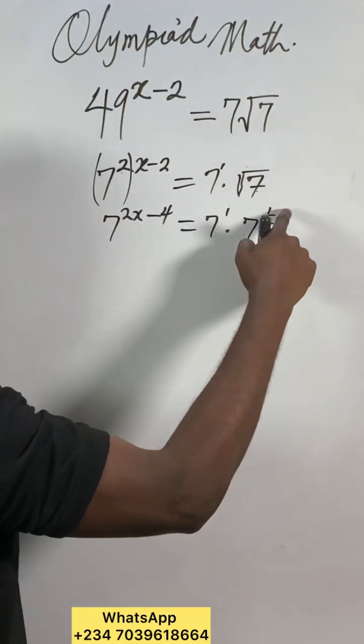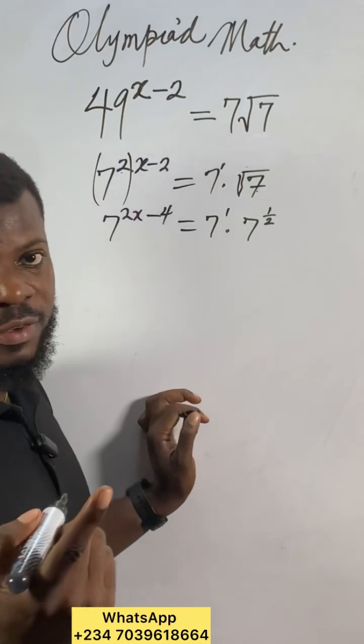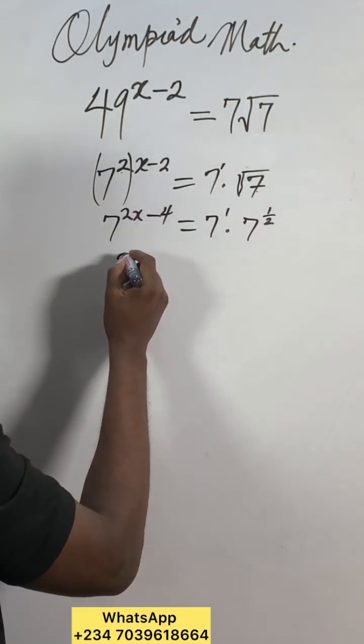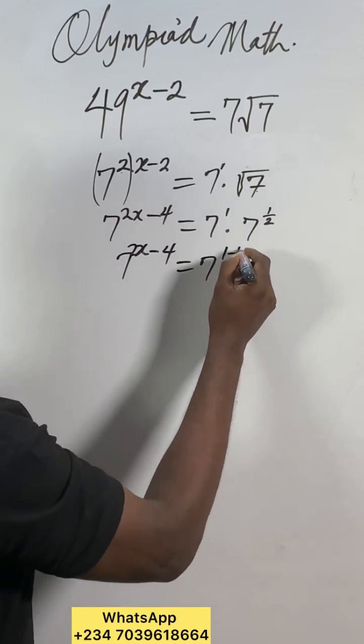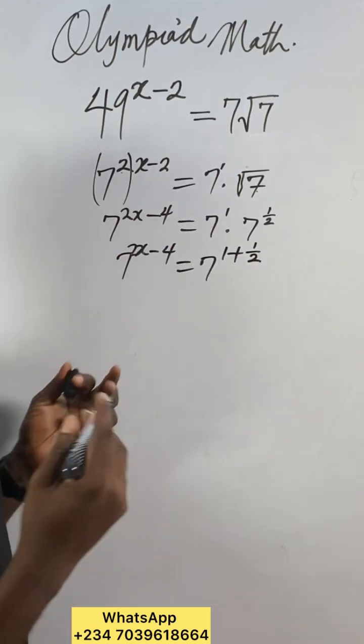Why do I like this? Because I will add these two according to the product law of indices. So 7 to the power of 2x minus 4 equals 7 to the power of 1 plus 1 over 2.